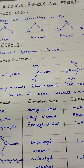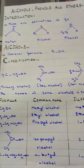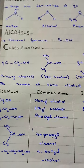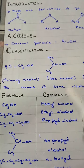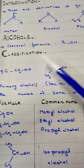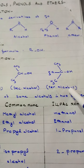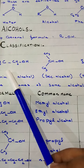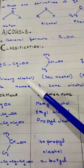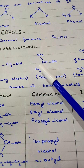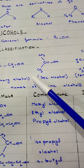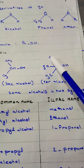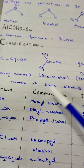We can classify alcohols according to the number or according to the position of OH group attachment. There are three classes of alcohol: primary alcohol, secondary alcohol, and tertiary alcohol. If the OH group is attached to a primary carbon — a carbon directly attached to only one other carbon — it is a primary alcohol. Secondary alcohol has OH attached to a secondary carbon (directly attached to two other carbons), and tertiary alcohol has OH attached to a tertiary carbon (directly attached to three other carbon atoms).